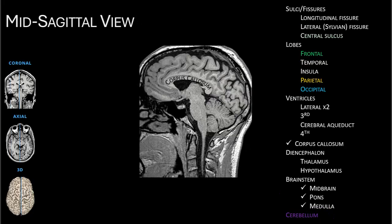In the standard mid-sagittal view, which is most familiar from textbook images, we can see the lobes: the frontal, parietal, and occipital, with the central sulcus between the frontal and the parietal. In the central region, or diencephalon, the circle represents the thalamus and the yellow triangle is the hypothalamus. We can also see all three regions of the brainstem — midbrain, pons, and medulla — with the cerebellum posterior to that.